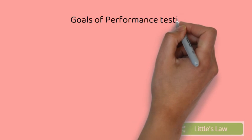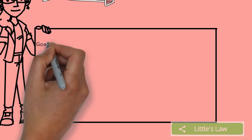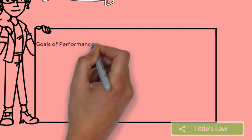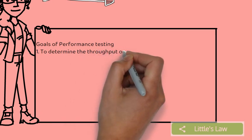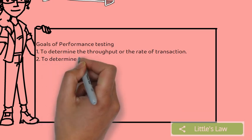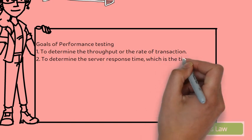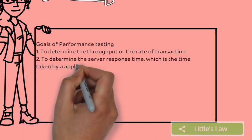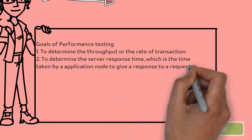Now that we understand what performance testing is, let's move to its goals. What are the goals of performance testing and what do we want to achieve at the end of it? First is throughput — the metric that indicates the number of transactions per second an application can handle.